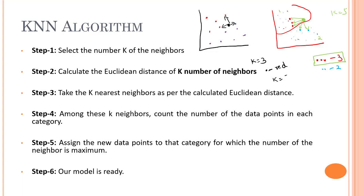But if you put K equals five, then we can say it belongs to the purple category. You can see that defining the number of neighbors is a really crucial element.